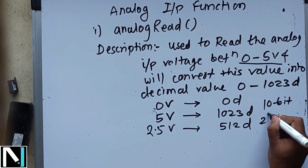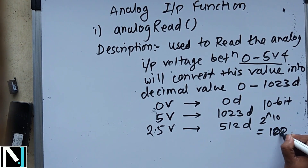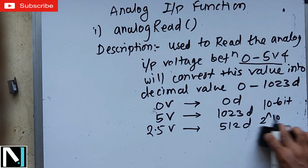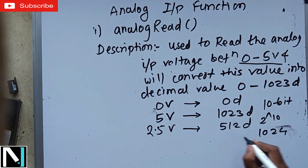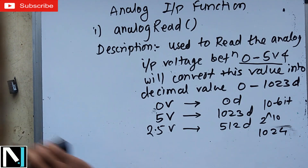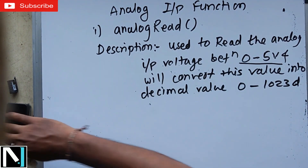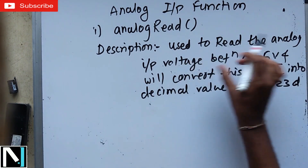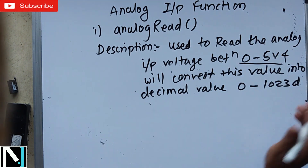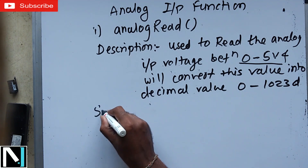This is because the internal ADC is a 10-bit ADC, so 2 raised to 10 gives 1024 possible values, and since it starts from 0, the maximum value is 1023. Just write down in the description: this function reads analog input voltage between 0 to 5 volts and converts it to a decimal value from 0 to 1023.